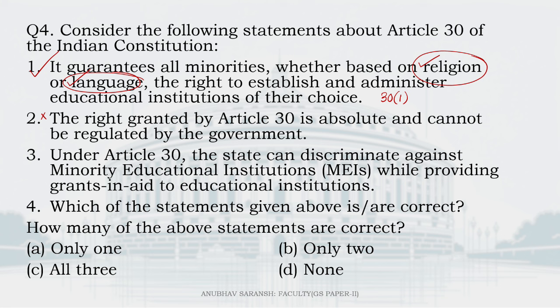Statement 3: under Article 30, the state can discriminate against minority educational institutions while providing grants-in-aid. This is wrong. Article 30, Clause 2 says clearly that the state shall not, in granting aid to educational institutions, discriminate against any educational institution on the ground that it is under the management of a minority, whether religious or linguistic. Discrimination is not allowed. Only one statement is correct — the answer is A.